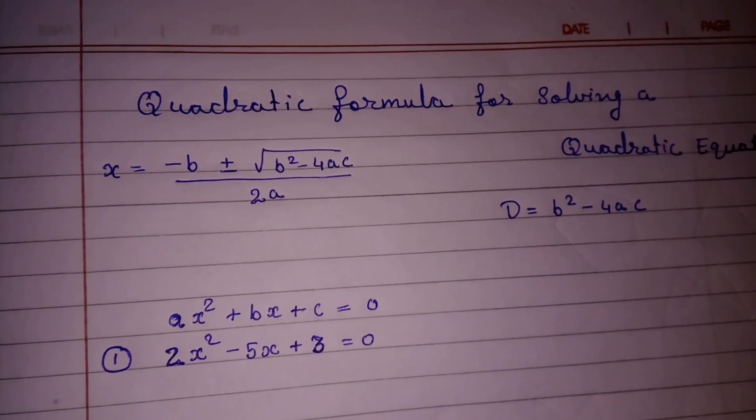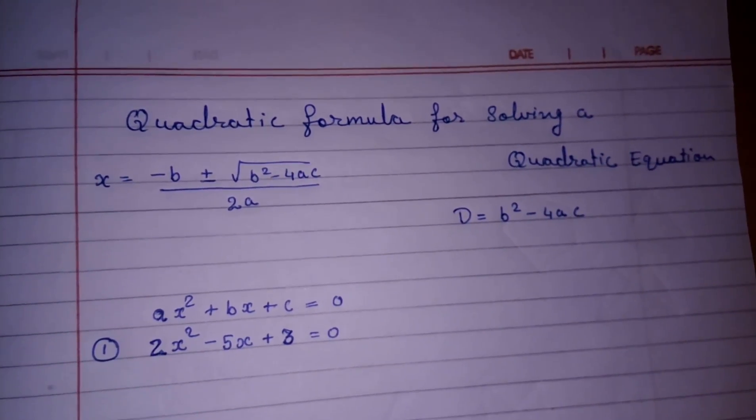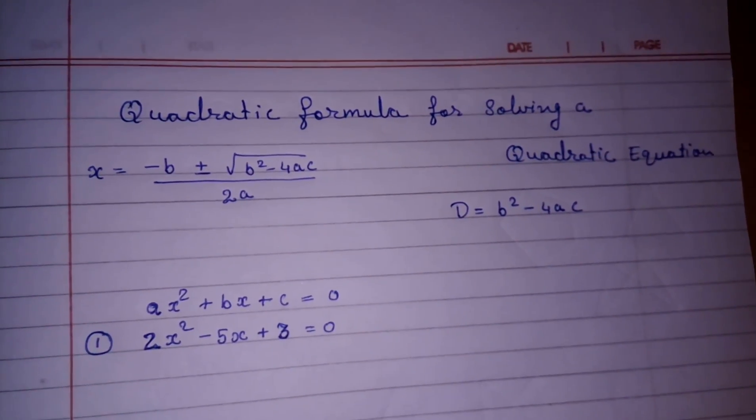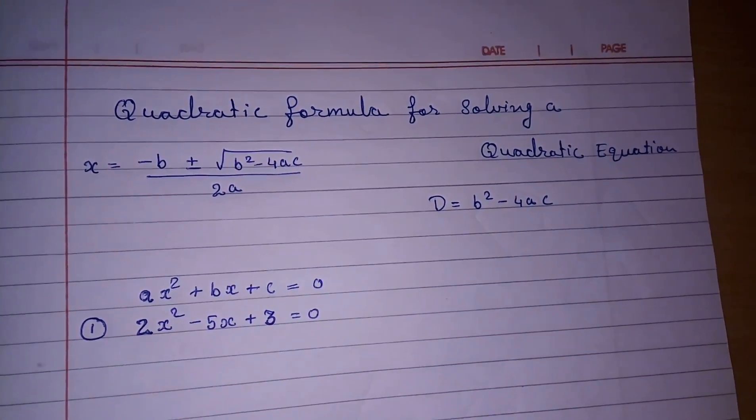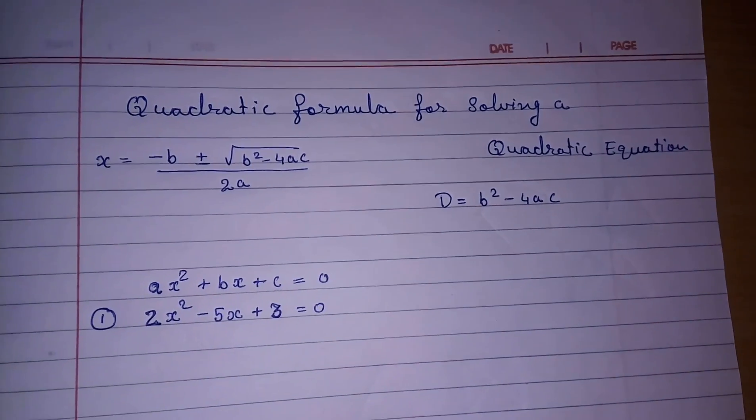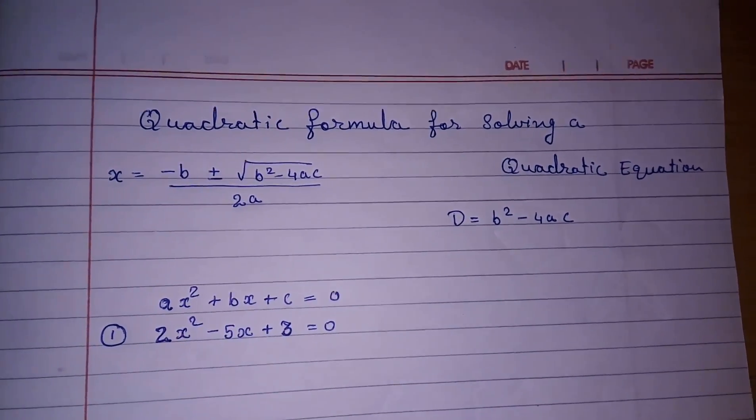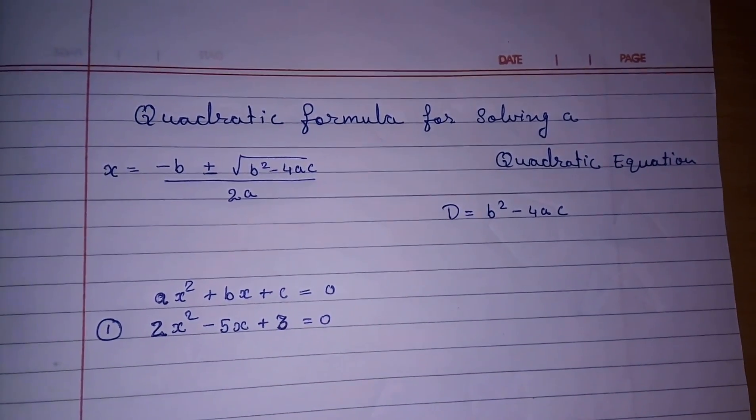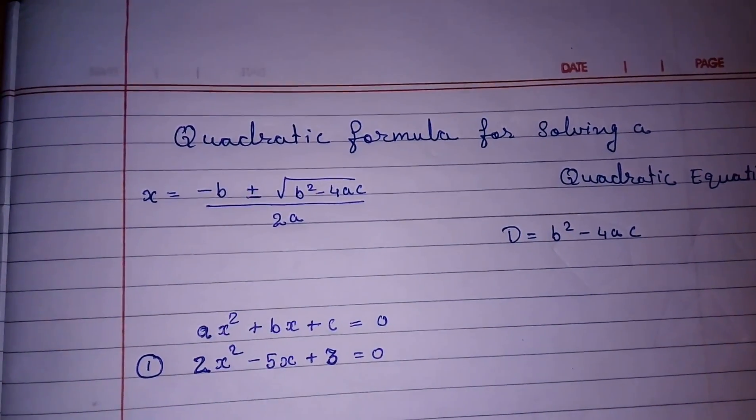This formula is very important as in other two methods we cannot find that we will get zeros or not directly. Here first we will come to know that directly we can find the zeros or not. If in the beginning only we come to know that we cannot find the zeros, no need of solving this method. So in the beginning only we will come to know can we find the zeros of this equation or not.